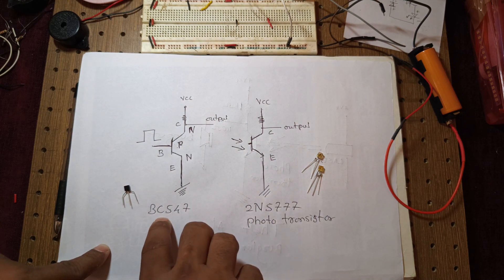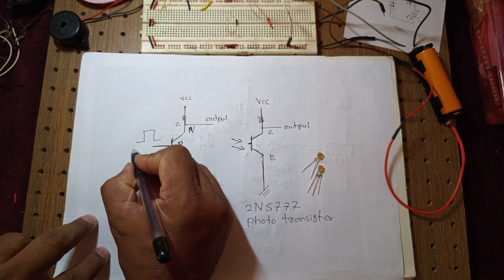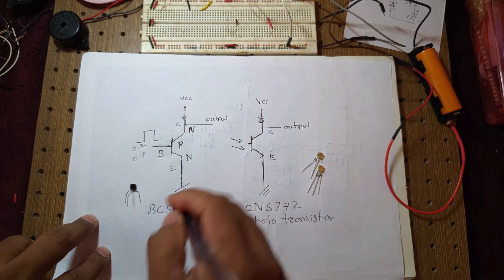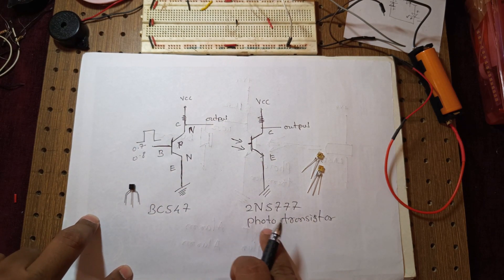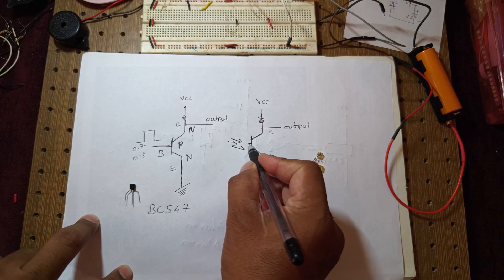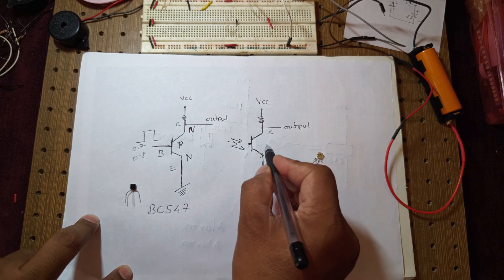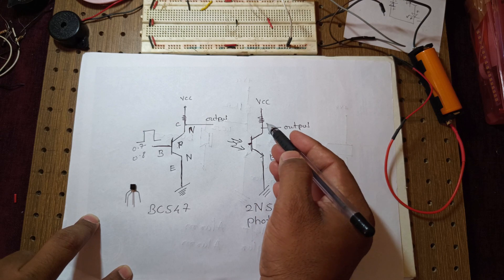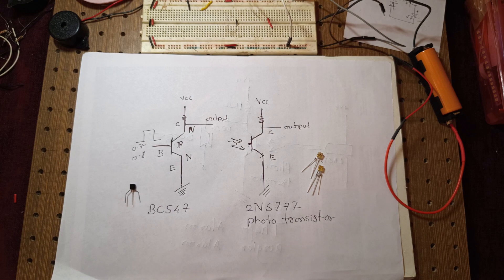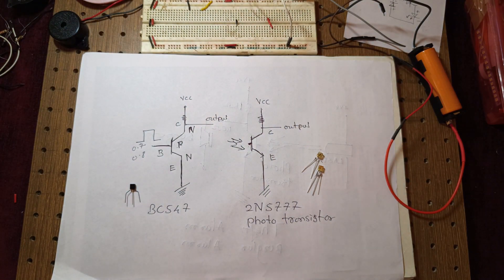The BC547 requires 0.7 to 0.8 volts to turn on the transistor. But to turn on the photo transistor, we have to apply some light on the base. Here the whole body acts as the base — when light falls on the transistor it acts like a base, and there will be a flow of charge from collector to emitter. Let us see how we can verify this with the help of a multimeter.